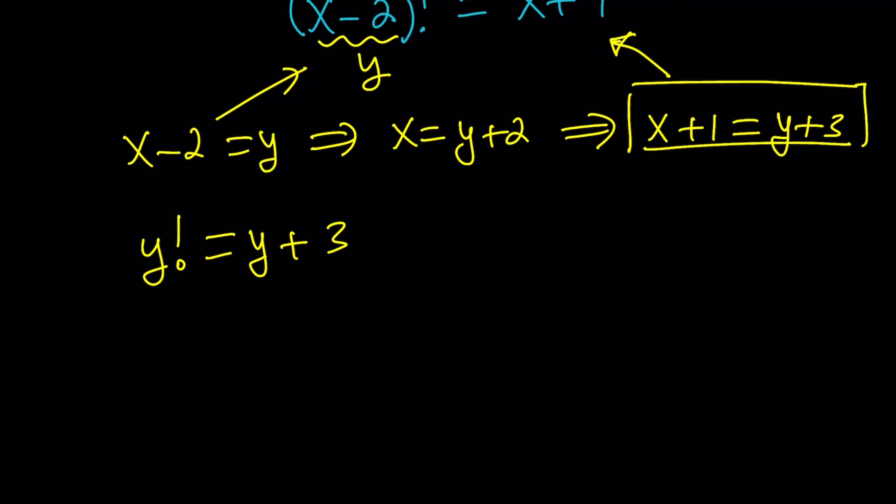Again, you can guess and check. And one of the things that makes it easier is there's going to be a turning point. For example, if y is equal to 1, 1 factorial and 1 plus 3, obviously, this is greater. They're not equal. 2 factorial and 2 plus 3, they're not equal.